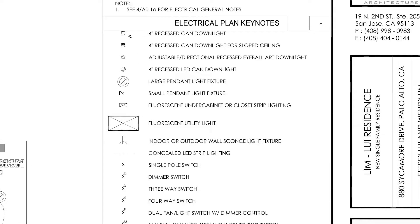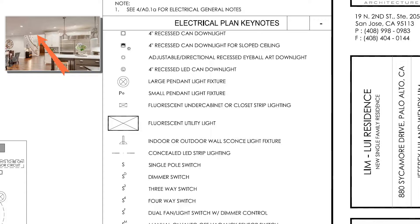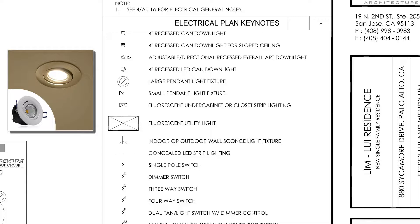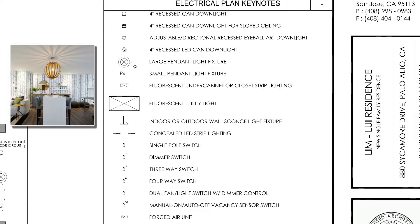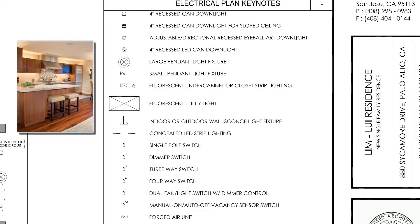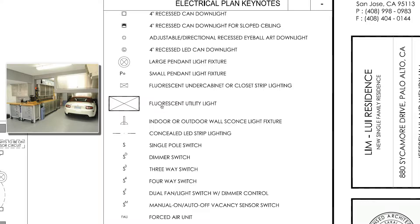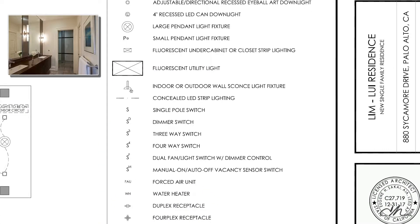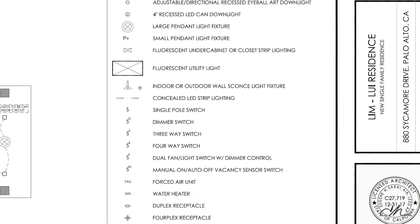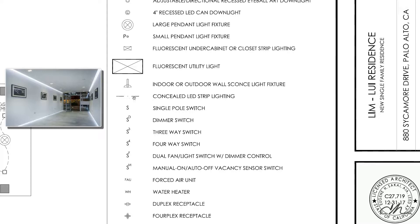At the top of the legend we have some symbols for lights. These two are for recessed downlights — the first one is for flat ceilings and the second one is for sloped ceilings. Then we have a directional up-down light, and the next one is for an LED light. Then these two are for large and small pendant lights. These other two are fluorescent lights — the small one is for under-cabinet or closet lighting, and the next one is the fluorescent utility light that we normally use for the garage. This other symbol is for wall sconces, shown both in the exterior and the interior. We will match the same locations where we are proposing these lights in the exterior and interior model. This other symbol is for LED strip lighting.